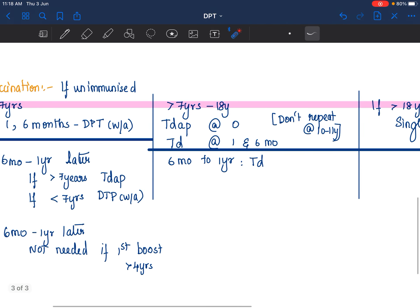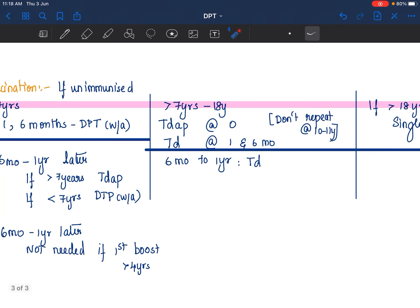If the child is more than 7 years and coming to you saying, I have not been immunized against DPT at all, then give 0 dose of Tdap. Don't repeat the same at 10 years for regular vaccination because you are giving it late only. And at 1 and 6 months, give TD.